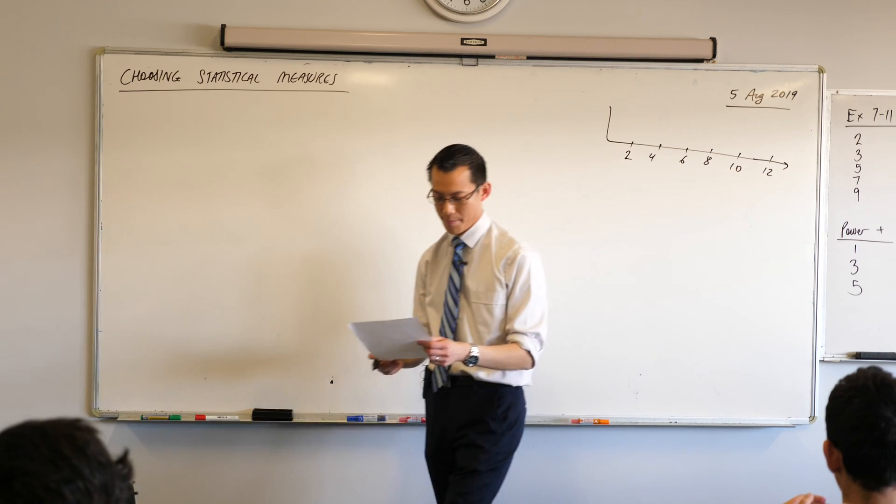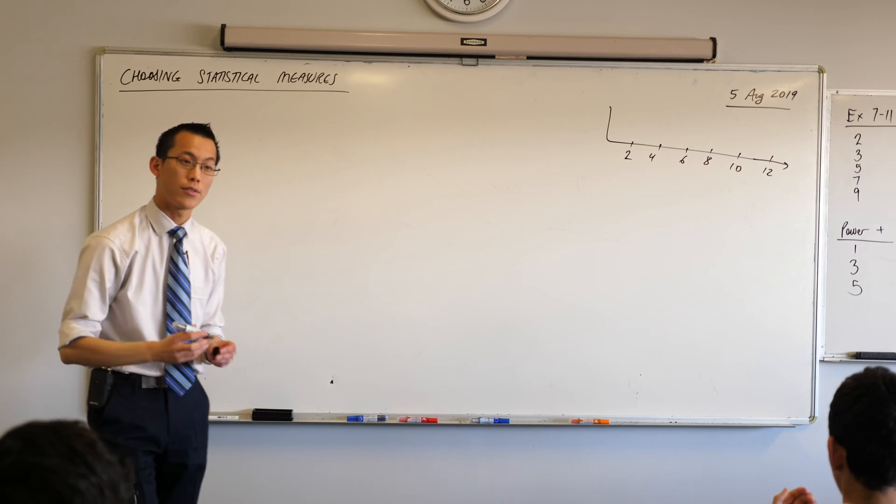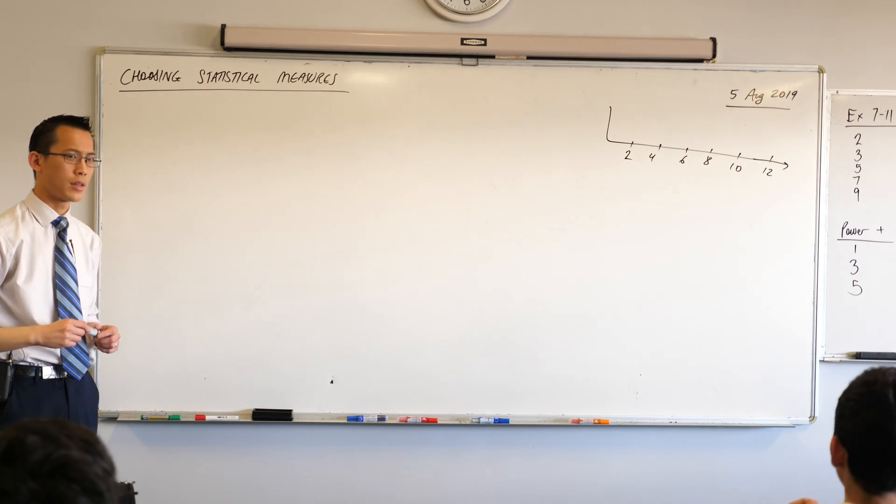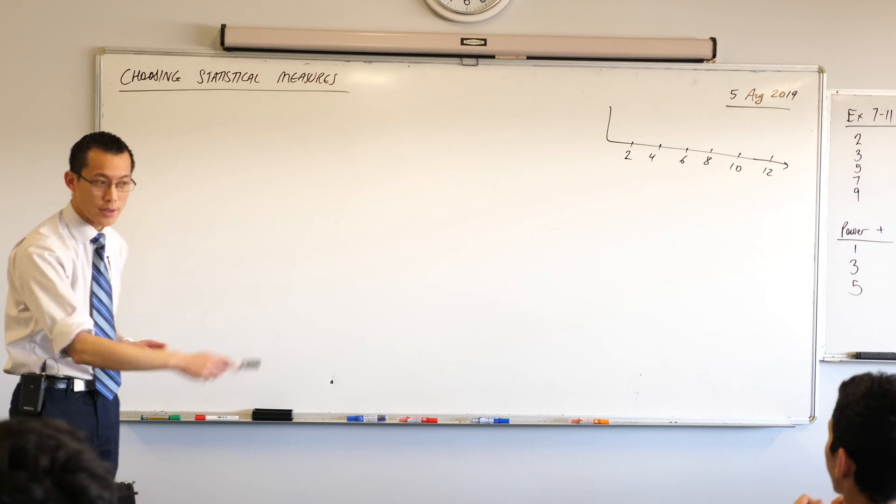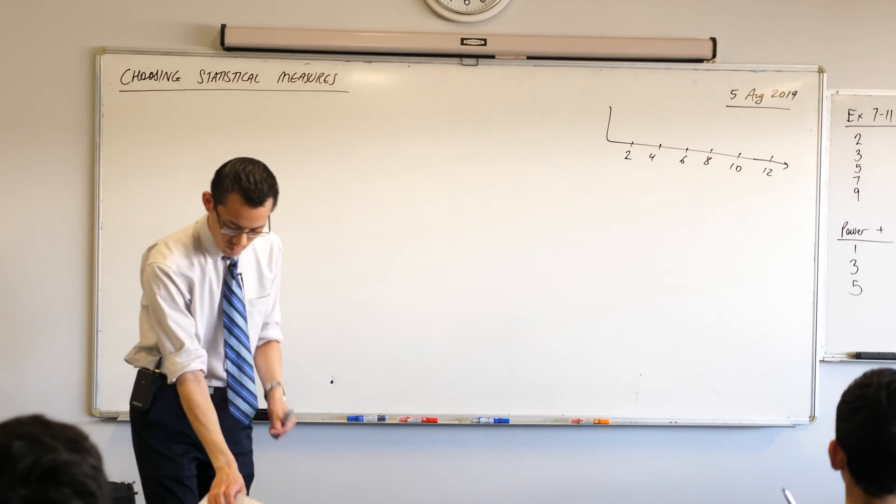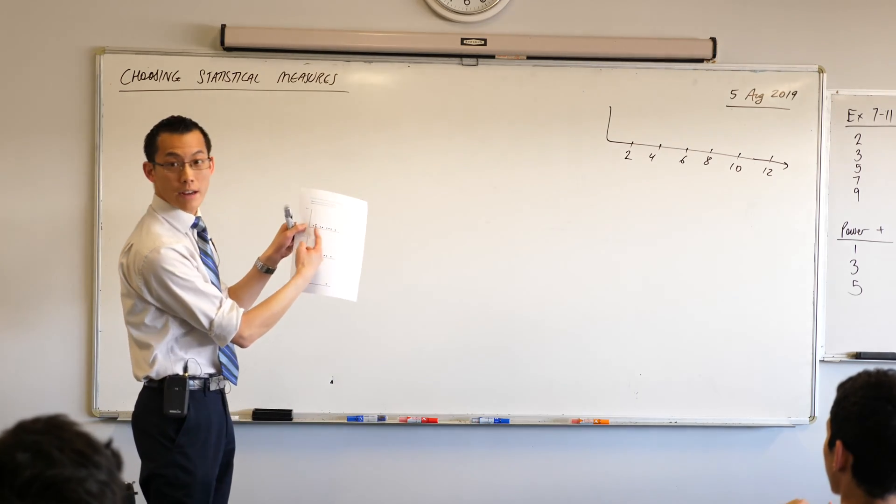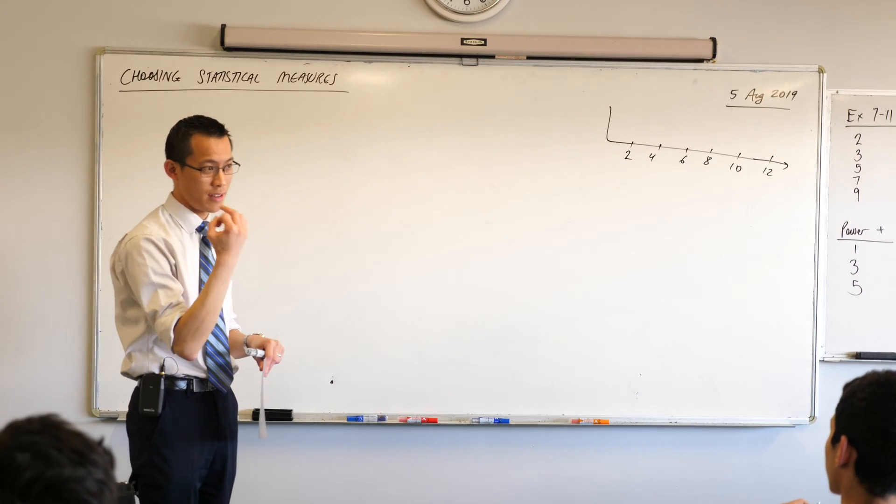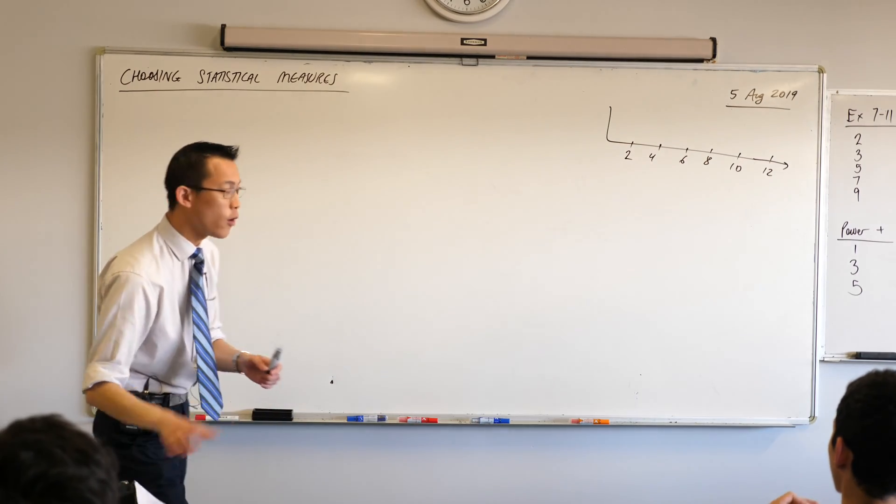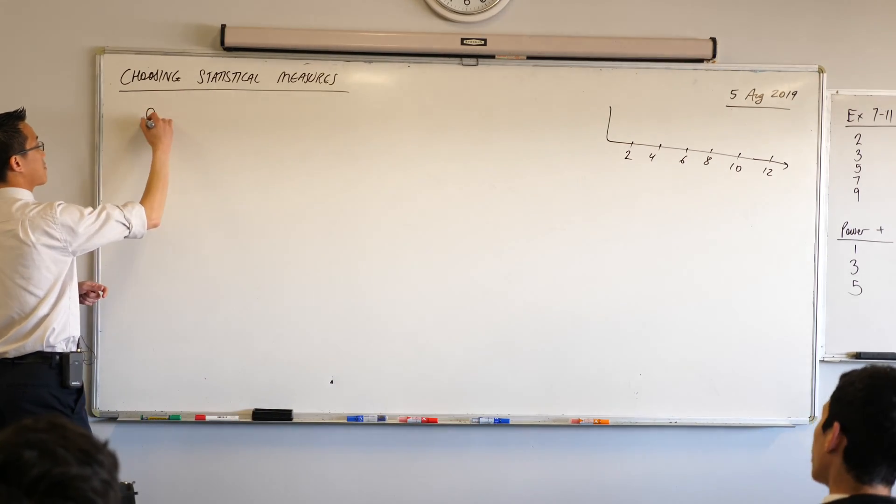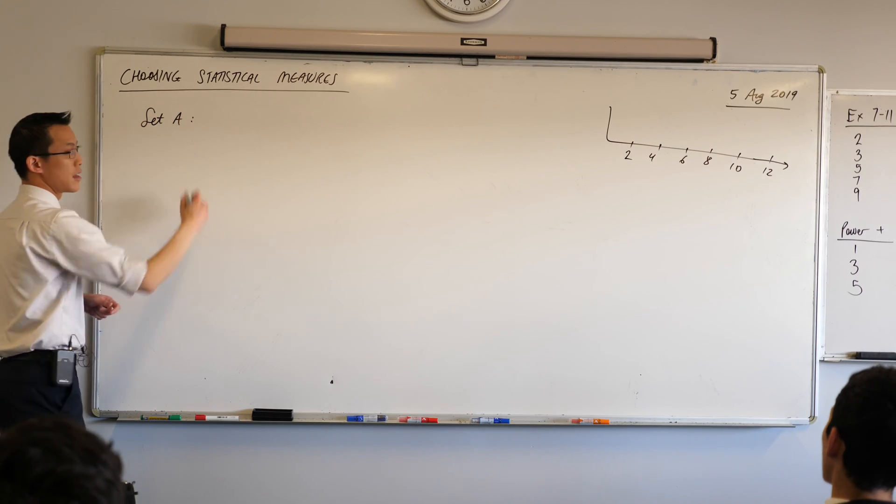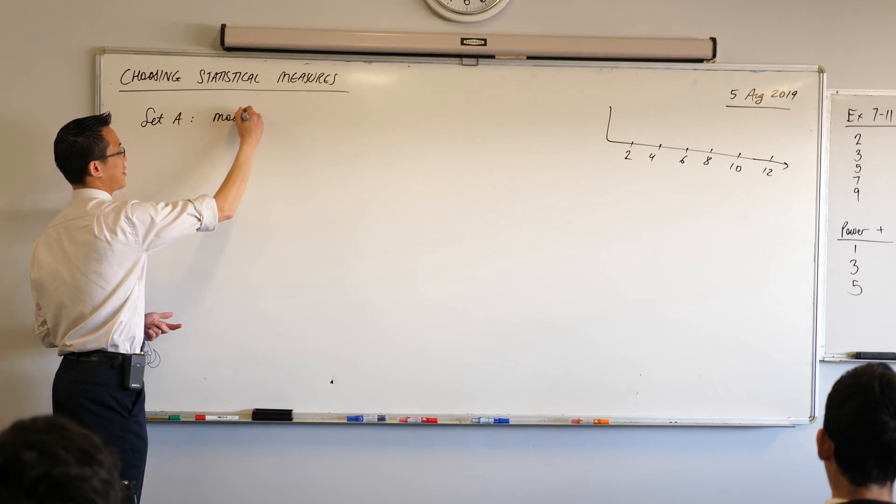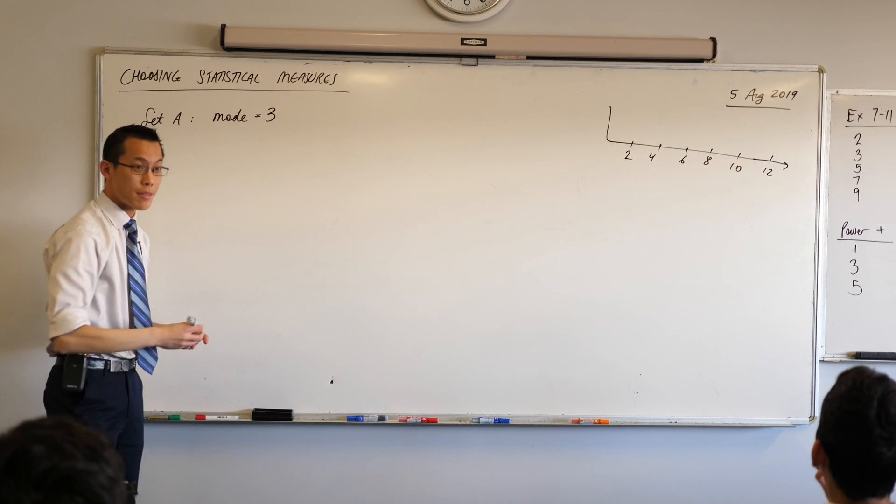Now, if we mark out the numbers in this way, when you have a look at the dots, what would the mode be? What would the mode of that first set of data be? Three. It's between the two and the four, right? I think it's three. Okay. So for set A, the mode, the most frequently occurring score, would be three.